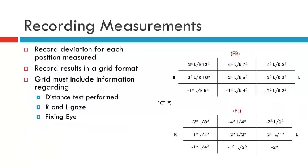When recording results, you'll need a grid format to represent the nine positions of gaze, recording the deviation in each position you measured. You should also document the distance at which the test was performed and which eye was fixing — fixing right or fixing left. Some orthoptists record which is right or left gaze, but it is always assumed that this side is dextroversion, this is levoversion, here is dextro-elevation, dextro-depression, and so on.